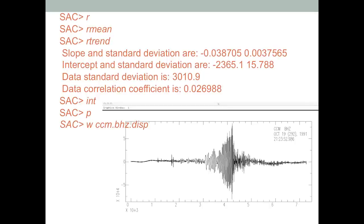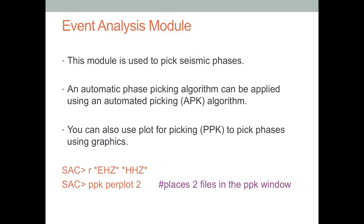Now I have a displacement seismogram — how do I save what's in SAC memory? SAC has a write command, shortcut W. Type W followed by the name of the new file you want to save. It's important to remember that you need to write out what you did in SAC if you want to save it or look at it in the future.